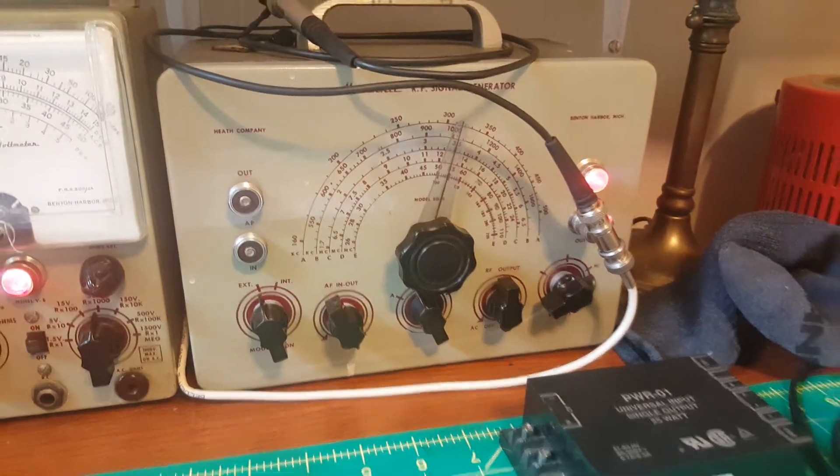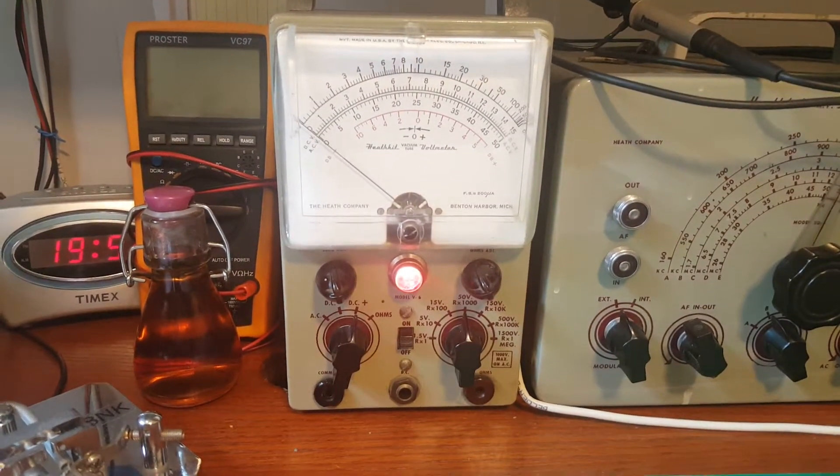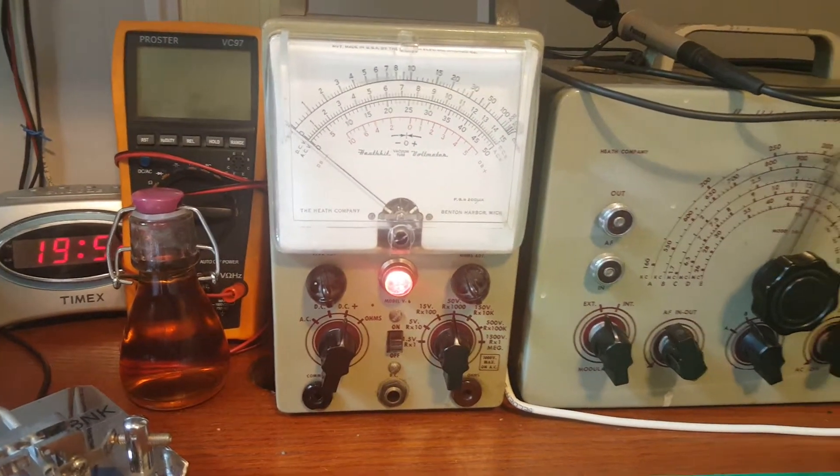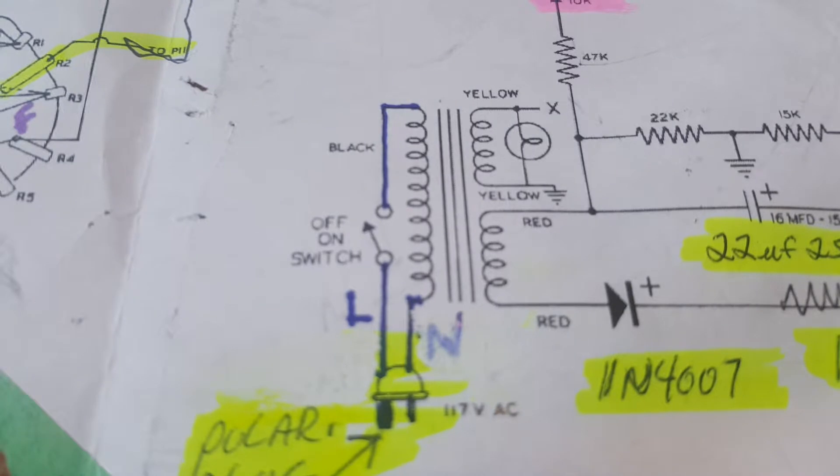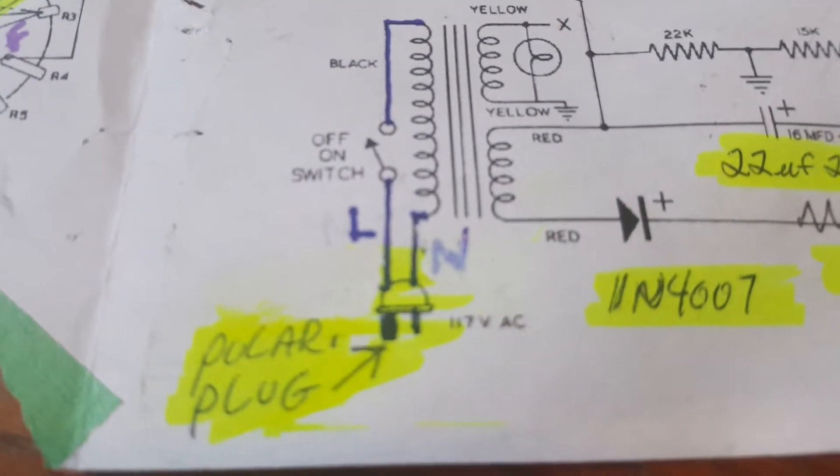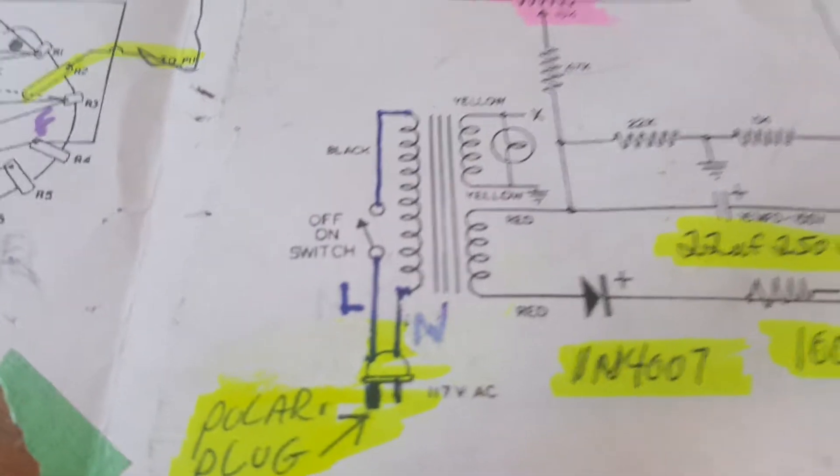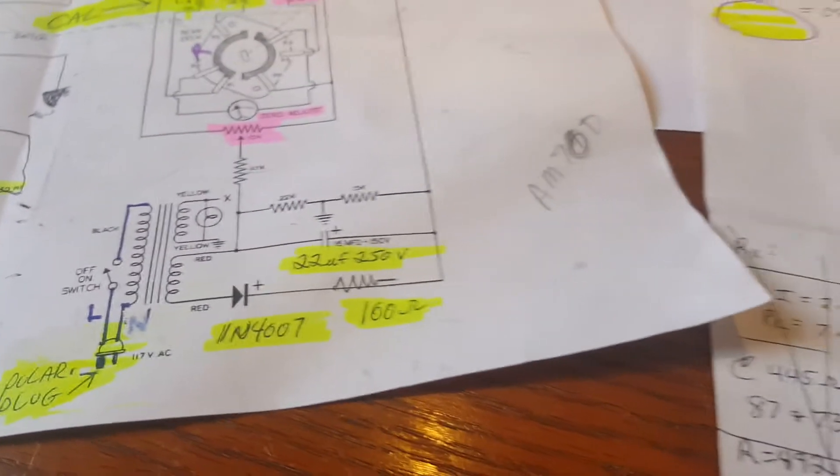Similarly, for the Heathkit V6 VTVM, same situation: hot line gets switched, neutral line isn't switched, no polarized—I'm sorry—no grounded plug, no grounded chassis. If we ground the chassis of our vintage test equipment...